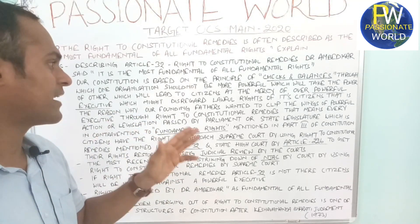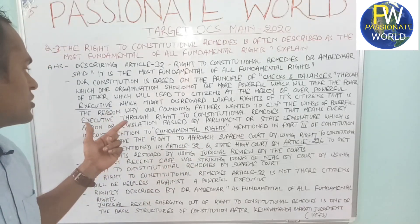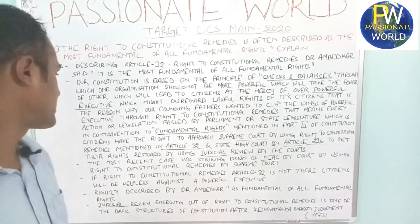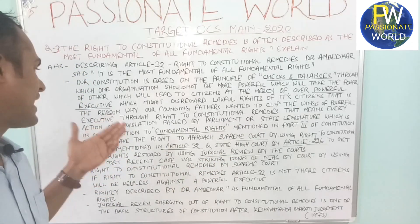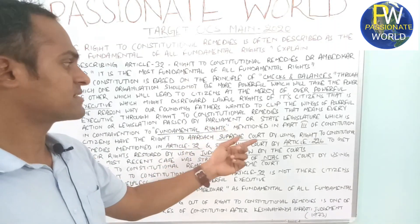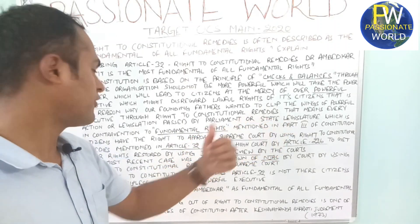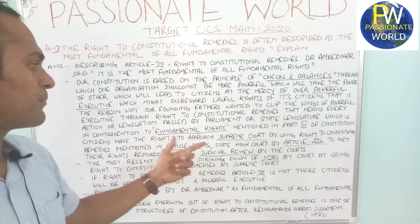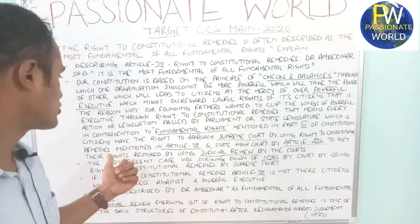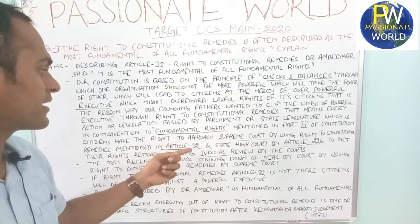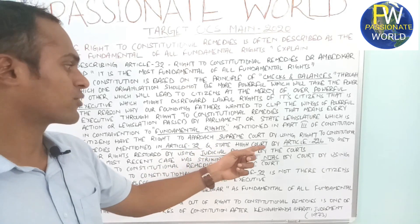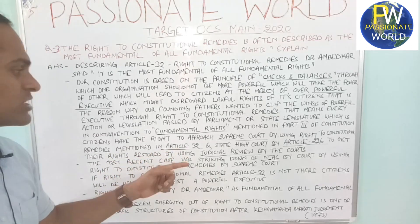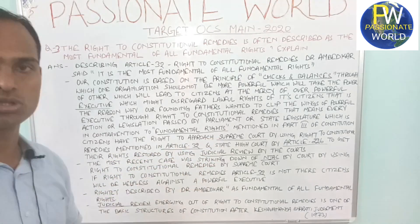So the right to constitutional remedies means every action or legislation passed by parliament or a state legislature which is in direct contravention to fundamental rights mentioned in Part 3 of the constitution — citizens have the right to approach the Supreme Court using Article 32 and the state High Court under Article 226 to get their rights restored through judicial review.